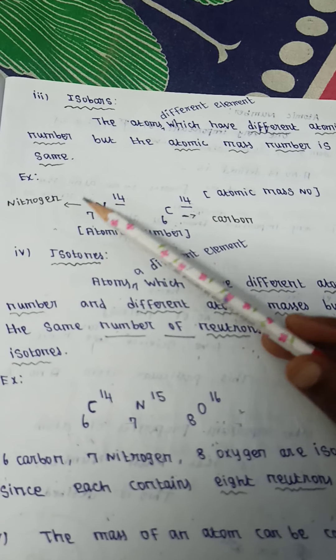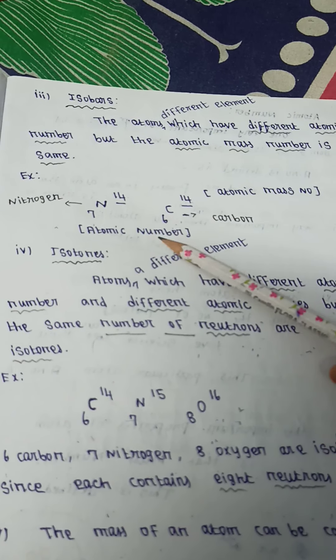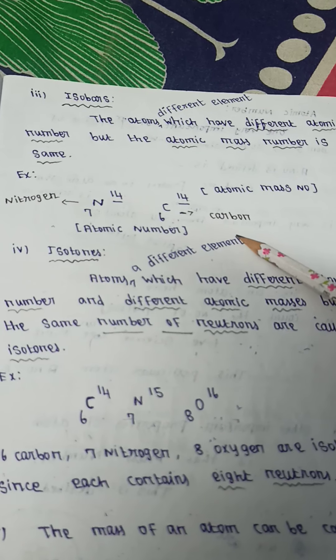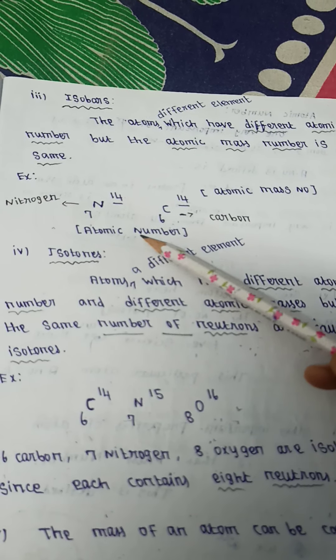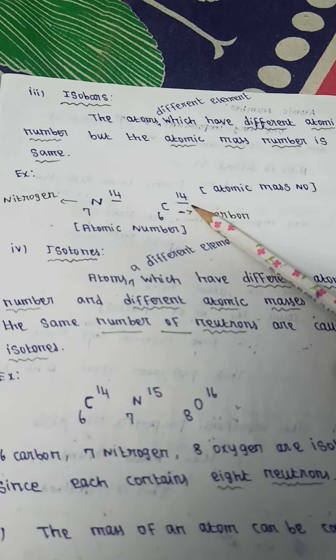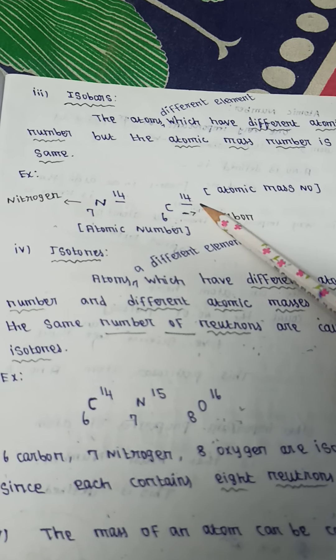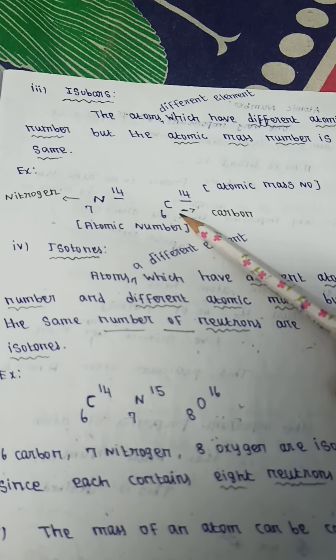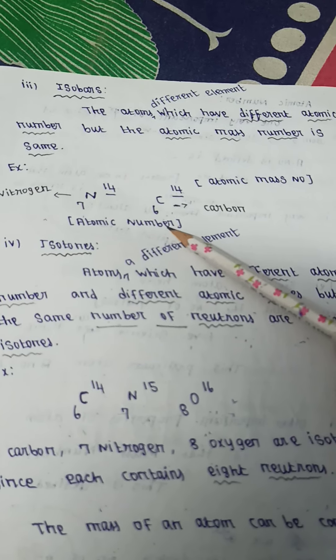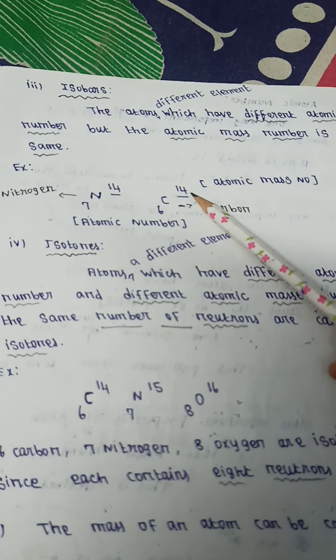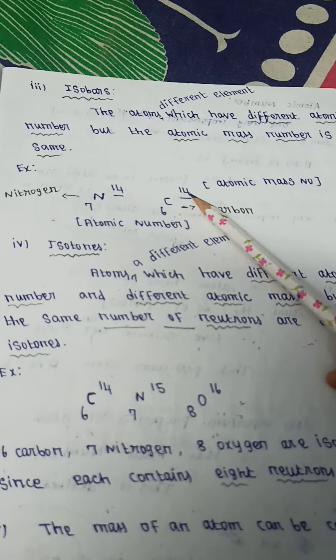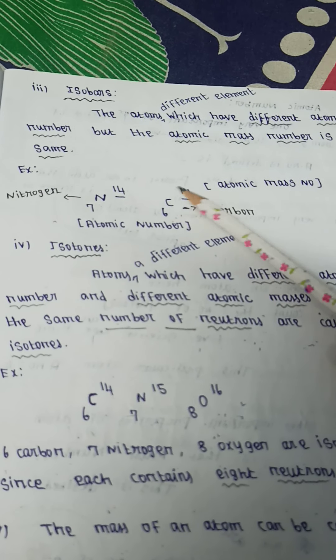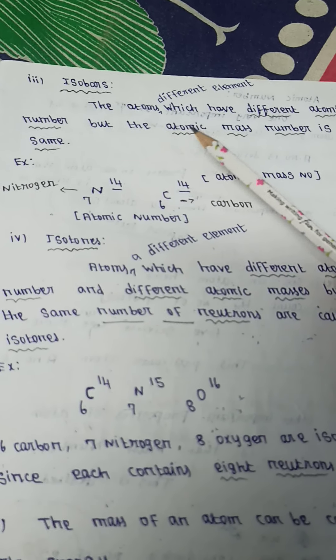N means nitrogen and C means carbon. So nitrogen and carbon are different elements with different atomic numbers, but same mass number 14. That is called isobar.